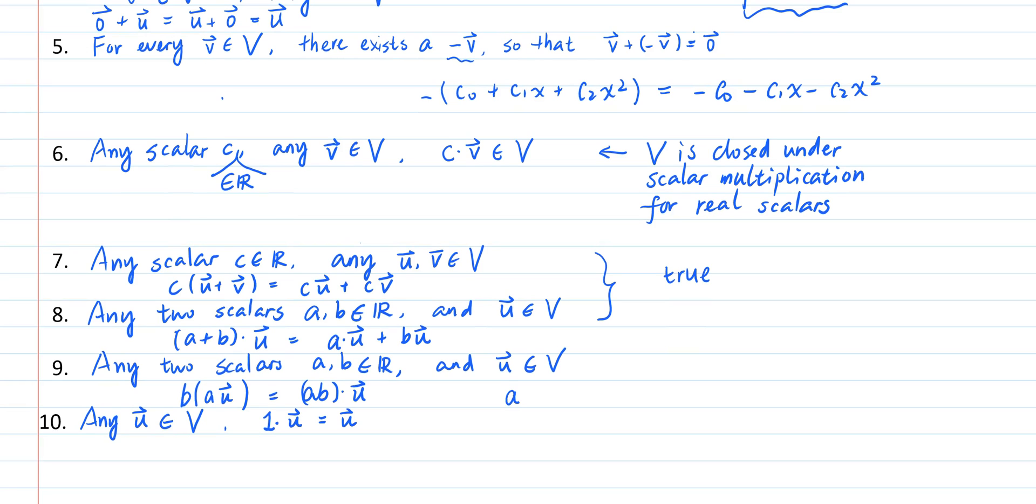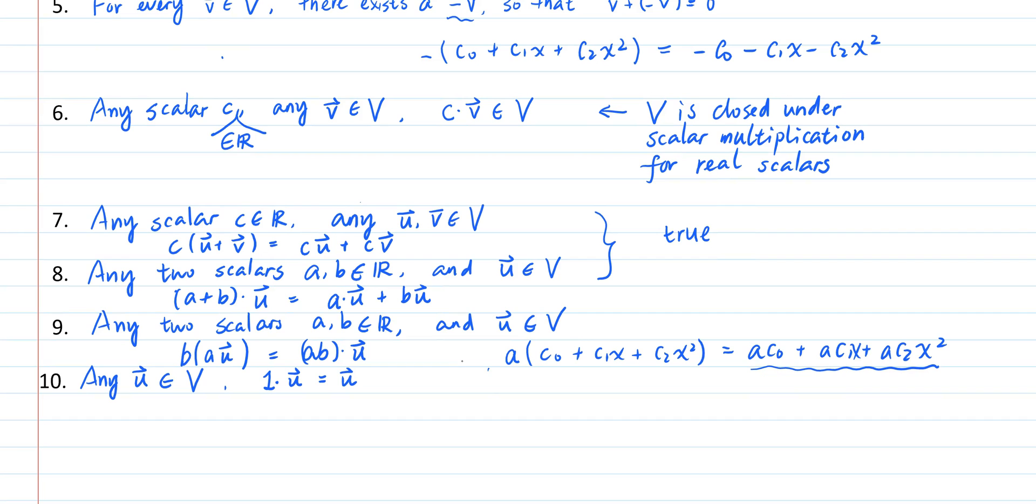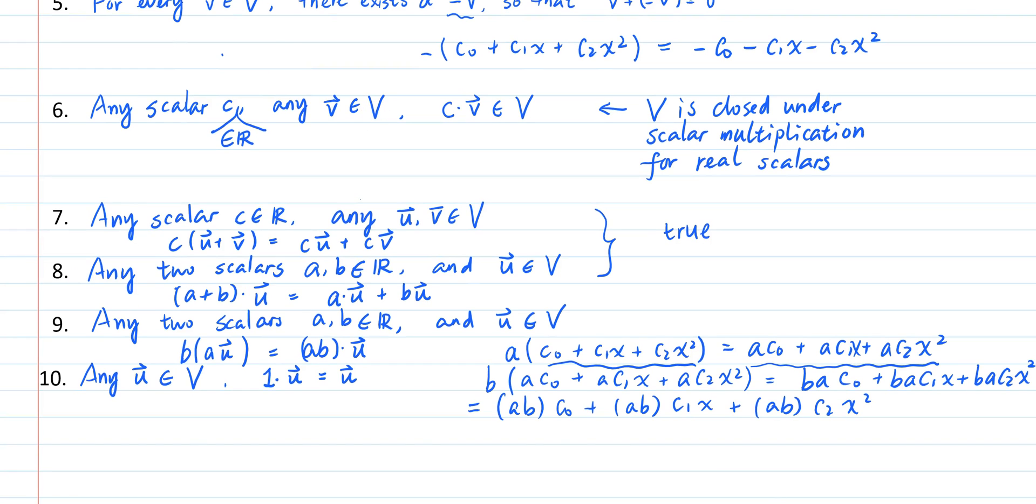Property 9 is true because of the associative law of multiplication for real numbers. So if I have the scalar multiplication of a polynomial and I multiply this scalar multiplication by another scalar, then I'm effectively multiplying the original polynomial by the scalar ab. Finally, property 10 is true because of the property of the real number 1.